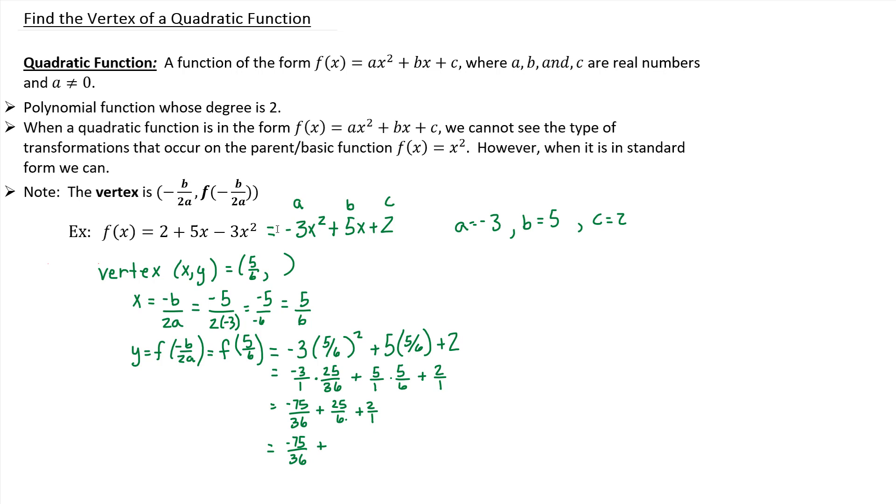But what I do to the bottom, I do to the top. So 25 times 6 is 150, and 6 times 6 is 36. Plus for this third fraction, we need to multiply by 36 to get a 36 in the denominator, which due to the numerator, you get 72 over 36.